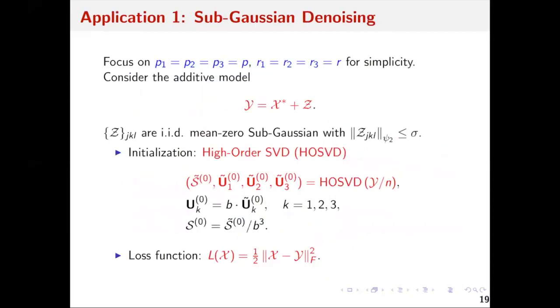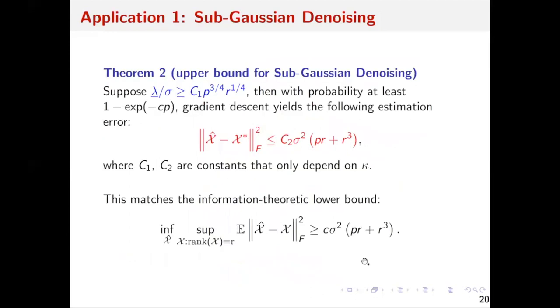With this deterministic result, we can apply it to the statistical setting mentioned earlier. We consider sub-Gaussian denoising with the additive model Y equals X star plus Z, where Z is i.i.d. mean-zero sub-Gaussian with the required conditions. We initialize with Y using HOSVD, which is an extension of matrix SVD for tensors. After applying gradient descent, we have a theoretical guarantee: as long as the signal-to-noise ratio is greater than this value, with high probability the gradient descent satisfies the estimation error upper bound, which matches the information-theoretic result in the literature.